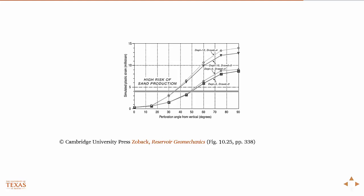This is the case where, for a fixed deviation in the well, you're looking at a range of perforation degrees and different drawdowns. This line again represents 4% equivalent plastic strain, and anything above that would be expected to produce sand. It's a fairly complex problem because it's dependent upon the amount of depletion, drawdown, and other factors. But these are the kind of results you can get with a fully coupled numerical model.